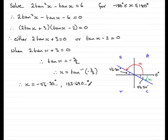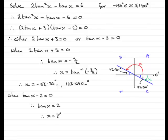Now solving the second equation: when tan x minus 2 equals 0. Rearranging gives tan x equals 2, and taking inverse tan of both sides: x equals inverse tan of 2. We need all solutions in range, so I'll draw the quadrant diagram again. Since tan x is positive, it's in the first and third quadrants.